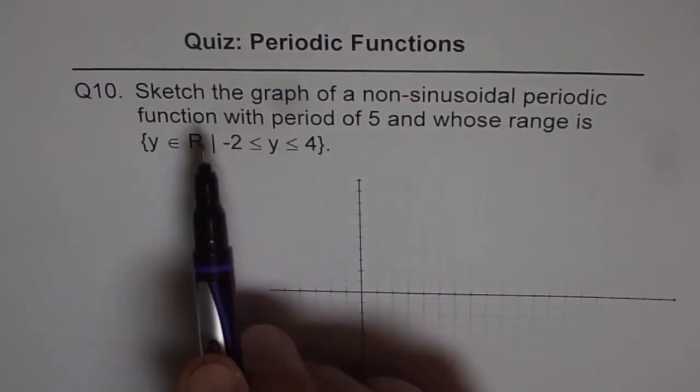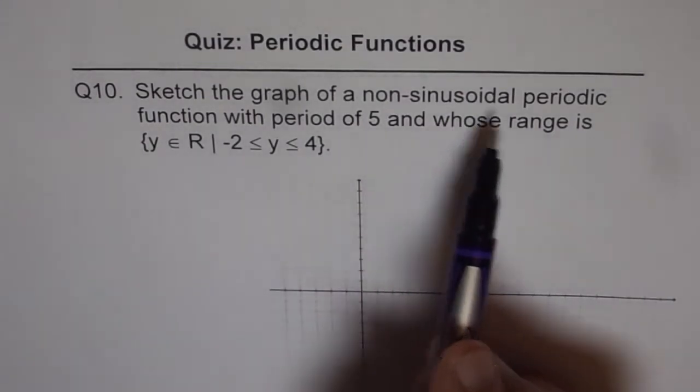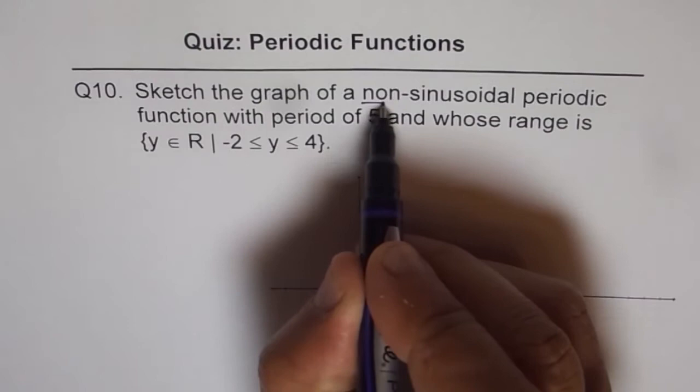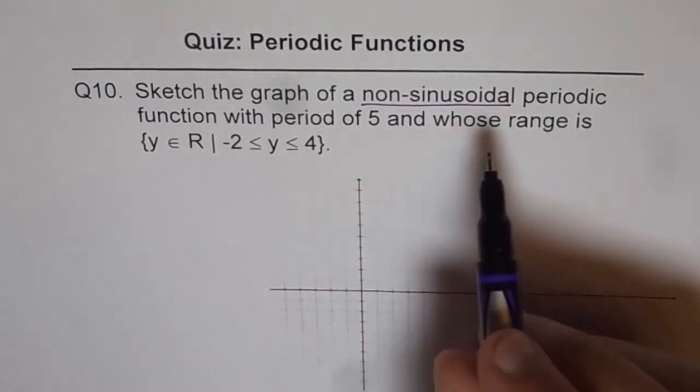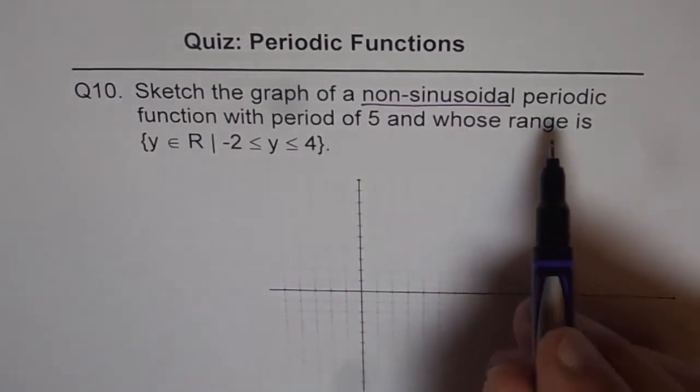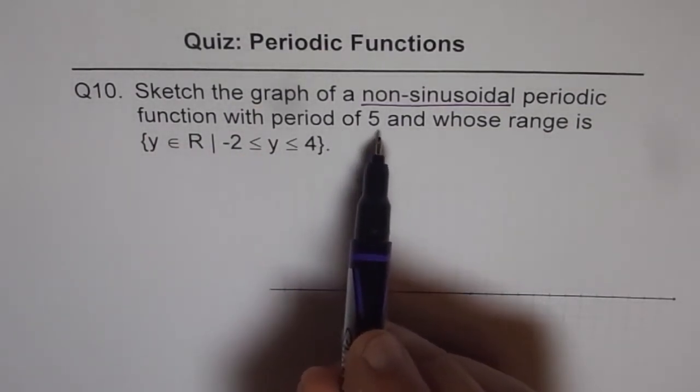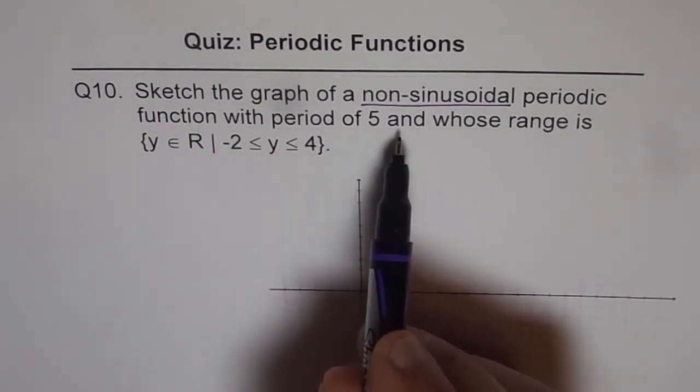So the question is sketch a graph of non-sinusoidal periodic function. So a critical word here is non-sinusoidal. So don't make a sine curve. Periodic, okay, function with period of 5. So it repeats after every 5 units, right?